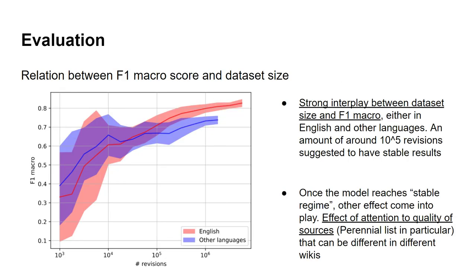We did this analysis: in this graph, we see the relation between number of revisions and F1 macro score of models for both English and other languages. On the left part of the graph, when there is not enough information, the model is not performing well in any case — it needs enough information to learn. On the right part, after enough information is provided, the English model performs better. This indicates that the behavior of editors and their attention to source quality also matters in this approach.